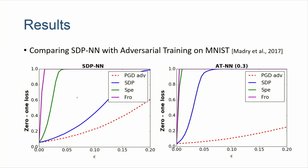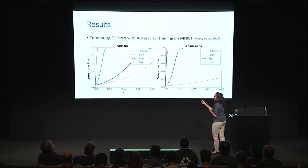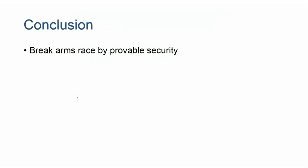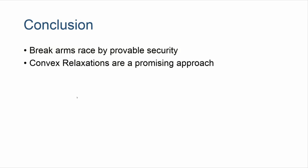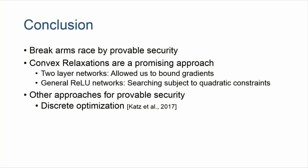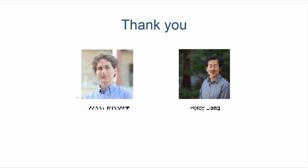Comparing to another current defense, our bound shows a smaller gap between current adversary success and the upper bound. To conclude: the main motivation is to break the arms race between attacks and defenses through provable security. Convex relaxations are a promising approach — two-layer networks allow us to bound gradients, and for general networks we reduce this to a search problem over quadratic constraints using the same SDP approach. There are also other approaches for provable security from Stanford with different trade-offs. Thank you — I'm open to questions.